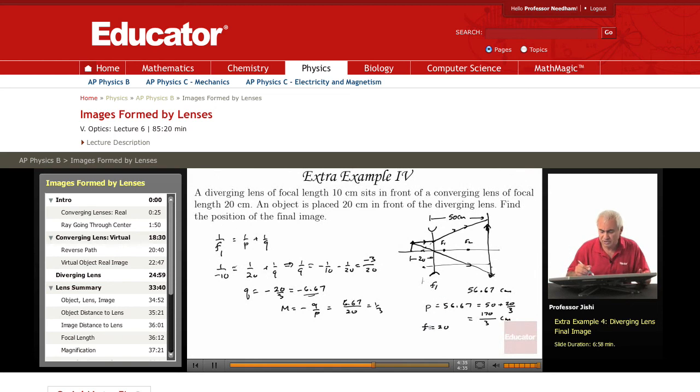So where is the image? I have 1 over Q. It's 1 over F minus 1 over P. So it's 1 over 20 minus 1 over P, so that's minus 3 over 170. So you get 340. That's a common factor. And you get 17 minus 6.